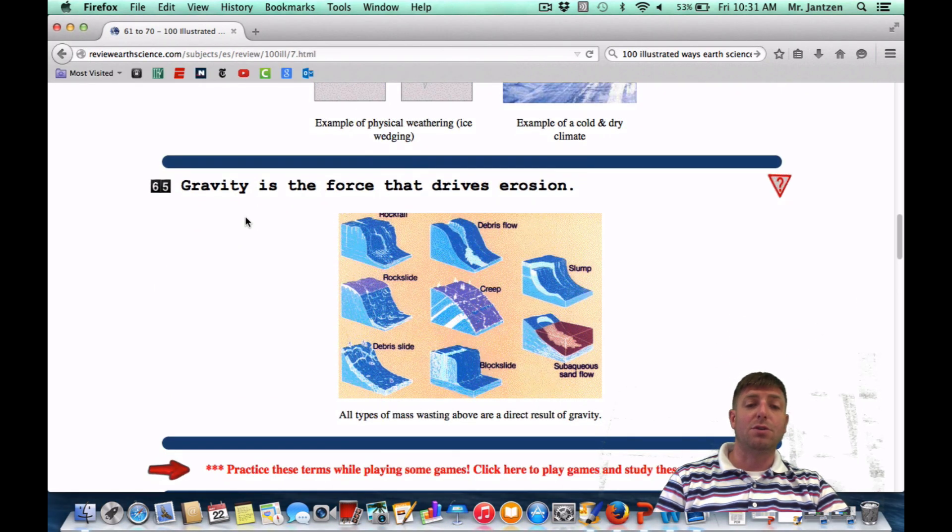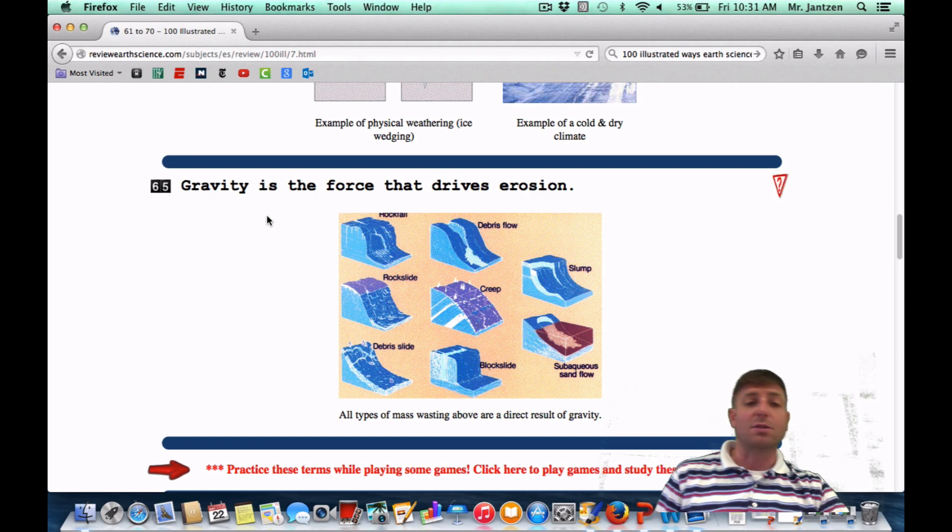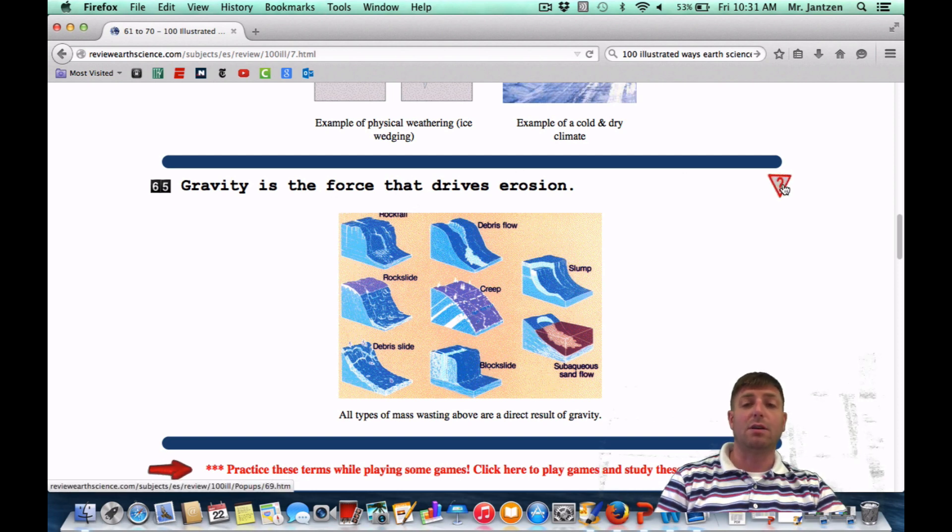Number 65: Gravity is the force that drives erosion. Gravity is pulling down, so that's going to cause different types of rock slides, mud slides, any one of those. It also causes glaciers to creep forward and streams to go downhill. Gravity is your driving force behind everything.